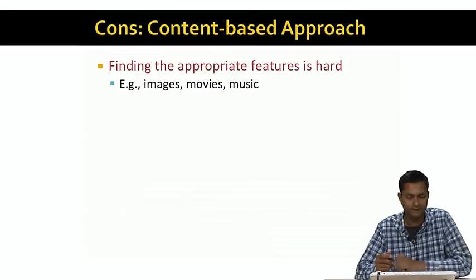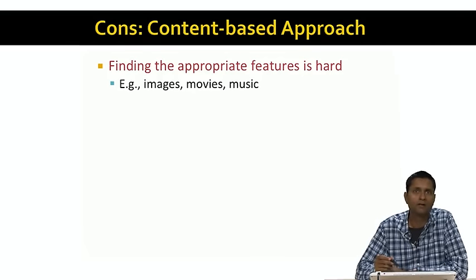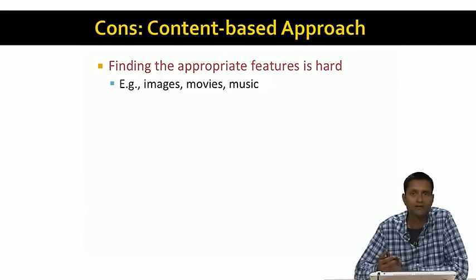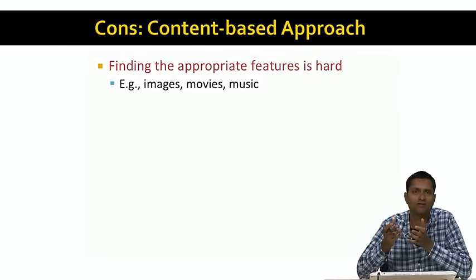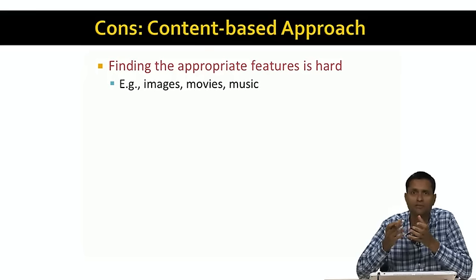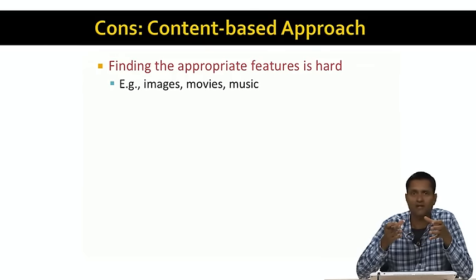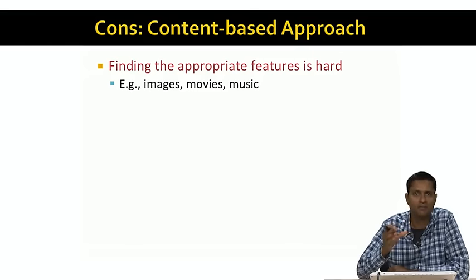Now let's look at the cons. The most serious problem with the content-based approach is that finding the appropriate features is very hard. For example, how do you find features for images, movies, or music? In the case of movies, we suggested actors and directors, but users are not always loyal to specific actors or directors. Music is hard to box into specific genres, and image features are very hard to find. This is the main reason why the content-based approach is not more popular.